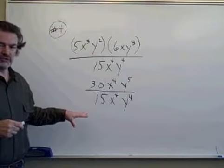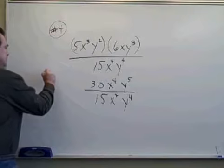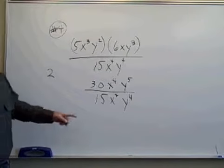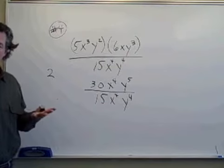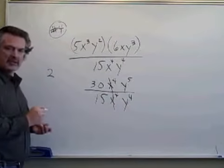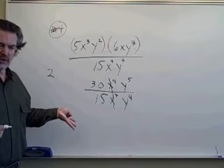Now I can do the division. Thirty divided by fifteen gives me the whole number two. X to the fourth divided by x to the fourth. Any non-zero quantity divided by itself is equal to one. One times two is just two. I don't need to put the factor of one there.